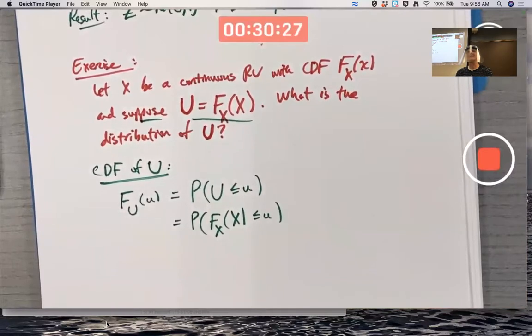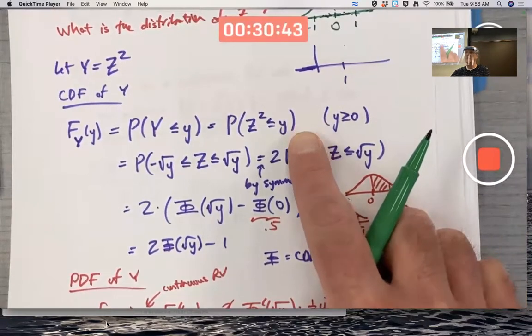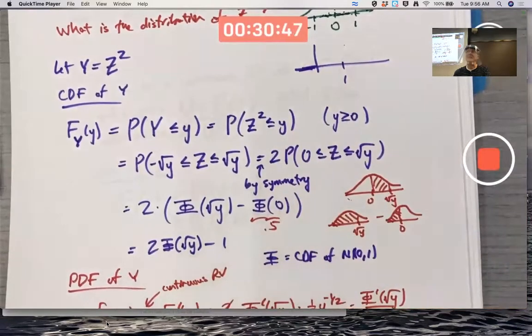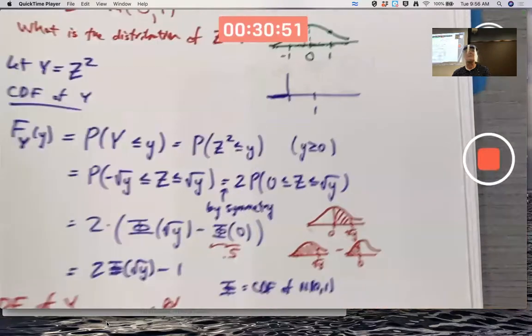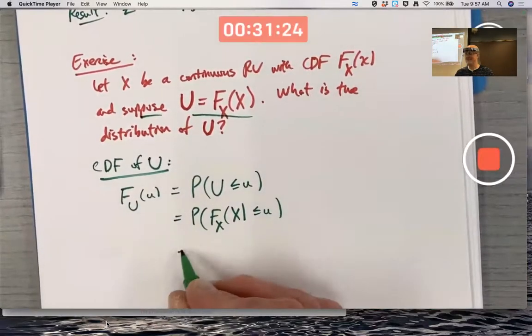Where in the world am I going with this? In the last exercise, I tried to rewrite the inequality in terms of Z to help me use the capital Phi, the CDF of the standard normal. Could I do something similar here in the abstract? Could I somehow isolate capital X, get rid of the capital F sub X somehow?